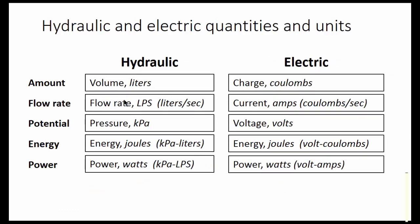So to summarize again, the volume is like charge, flow rate is like current, pressure is like voltage, energy is in joules, that is pressure times volume, kilopascal liters, or voltage times charge, volt coulombs. Power is pressure times flow rate, kilopascals times liters per second, or in an electric circuit, voltage times current, volts times amps.